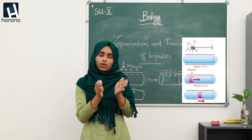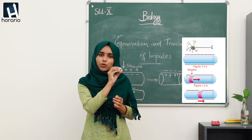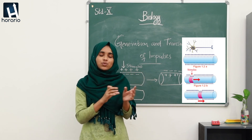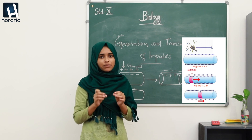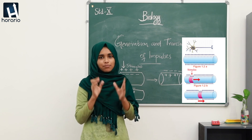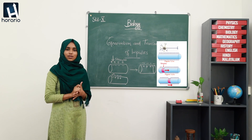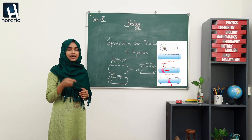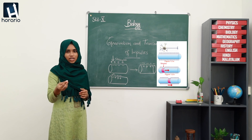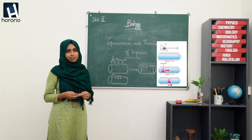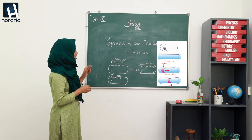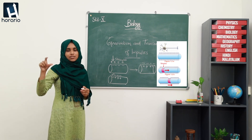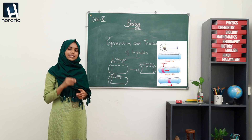This momentary charge change can stimulate the next part and it will move continuously. We can call an impulse as the movement of reverse charge. The movement of reverse charge through the axon will create the impulse, and it is an electrical impulse. The generation and transmission of impulses is due to the reversal of charge across the plasma membrane, and this reverse charge movement is known as an impulse.